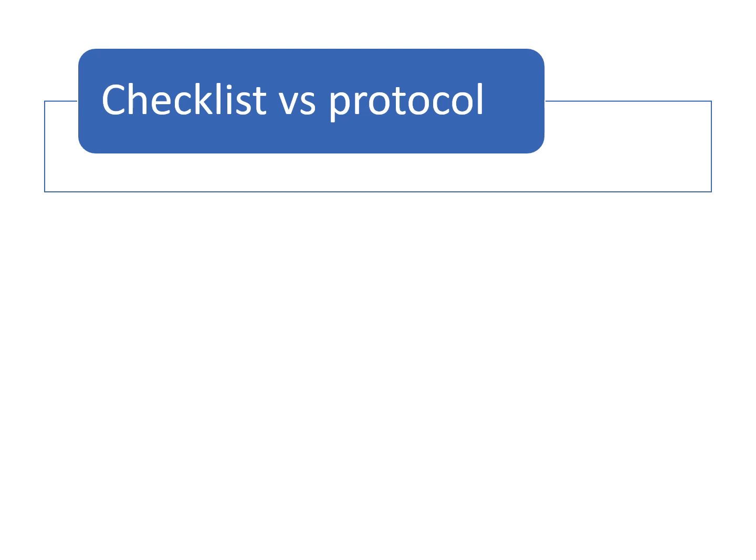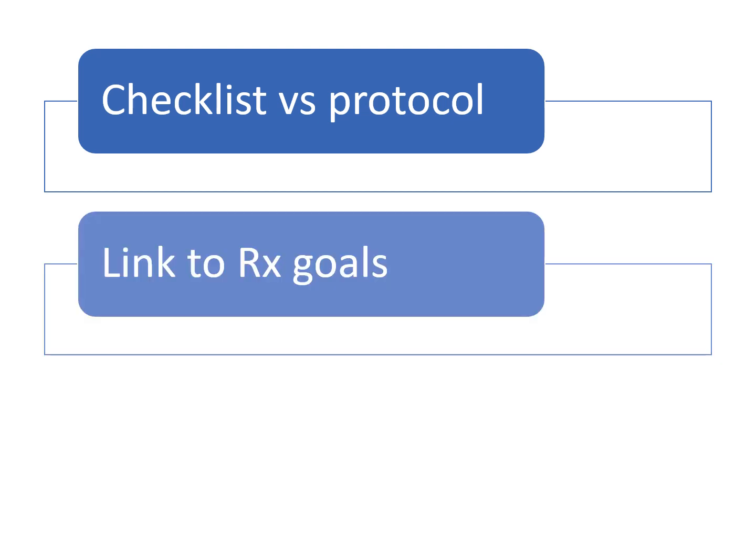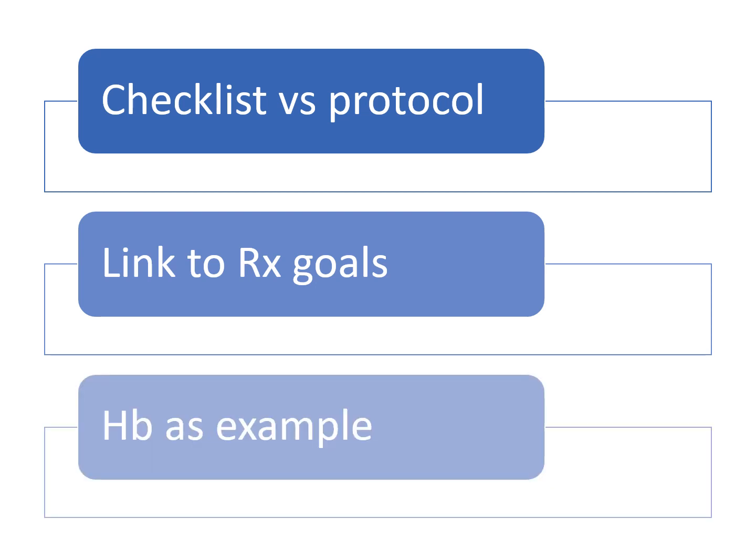Remember that this is a checklist, not a protocol — it's a memory aid, not an instruction of exactly what to do for each letter. When it says G for glucose and glycemic control, you implement your protocol to keep your sugar within a certain range. It should be linked to treatment goals. For example, with hemoglobin: if the HB is 10, you should also define that you will keep it above seven and transfuse if it drops below seven. That target might differ depending on the patient — lower in chronic renal failure, higher in a cardiac patient — but the point is to define the minimum and how you'll respond if it drops below that.